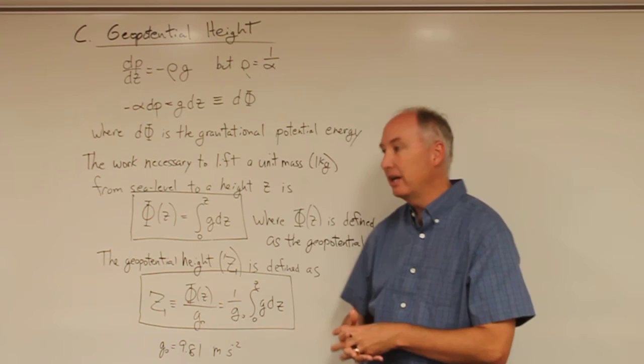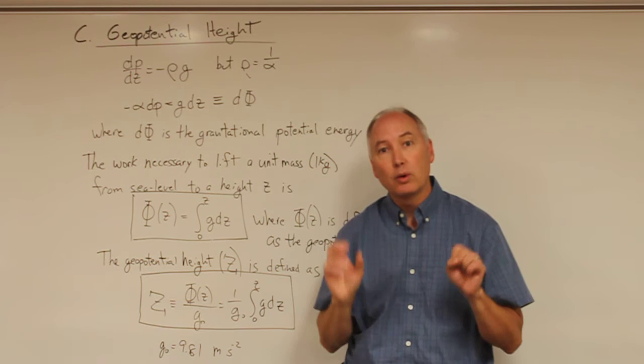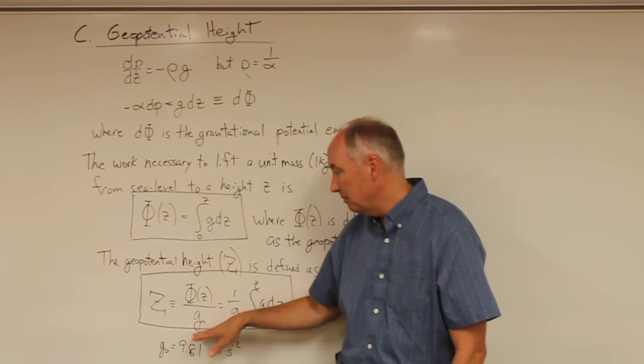So what we do is assume constant gravity and adjust the height so that the gravitational potential energy will be correct. That height adjustment is done through the geopotential equation.